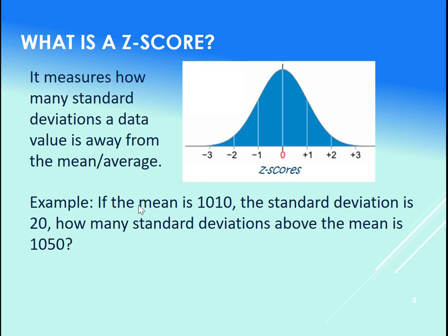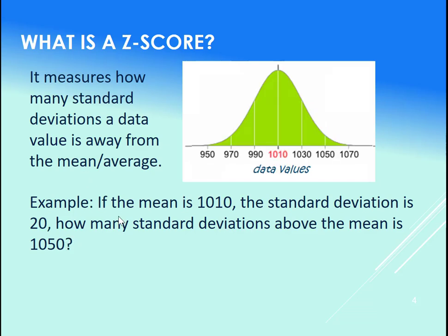Now let's just look at a specific example. So let's say your mean is at 1010, standard deviation at 20. How many standard deviations above the mean is 1050? Again, we have this graph here. You can go get your z-score: 1050 minus 1010—so mean is 1010—divided by 20 equals 2.